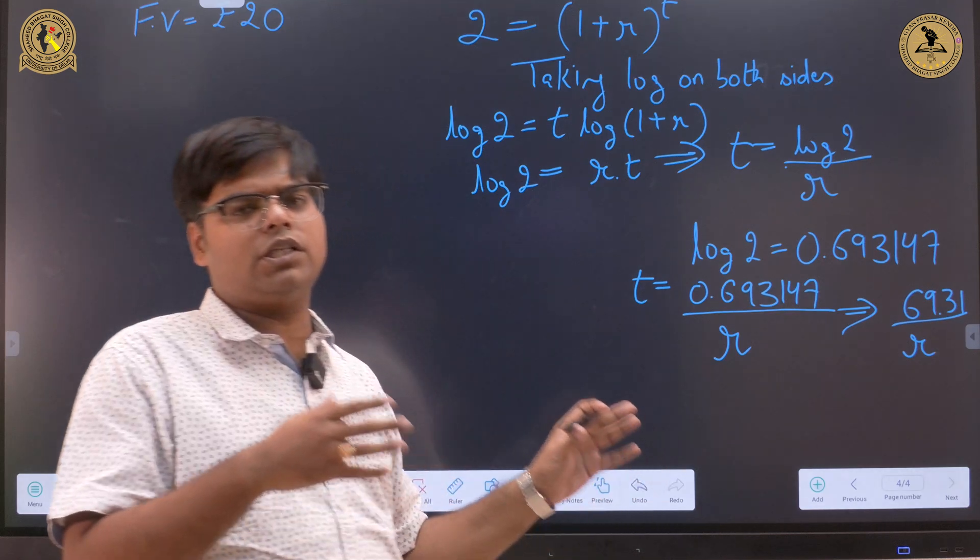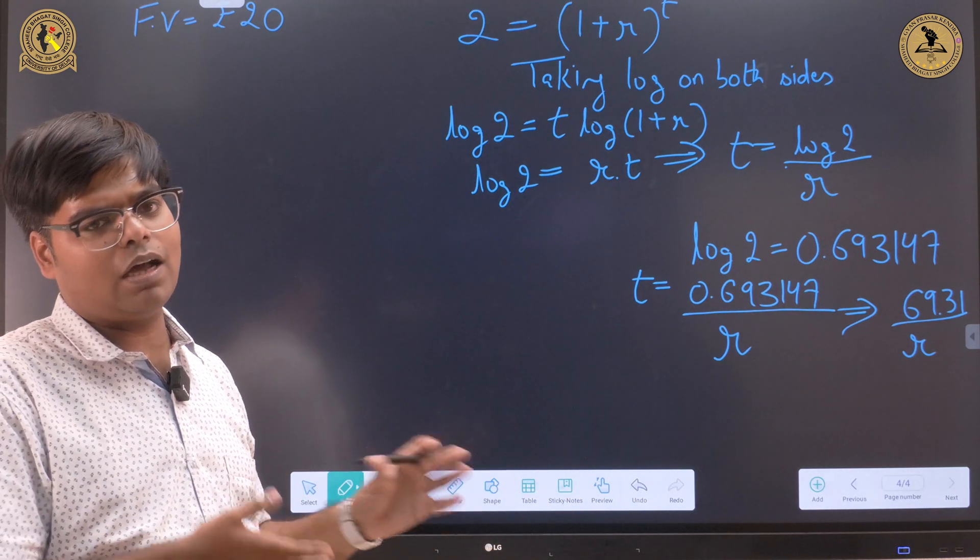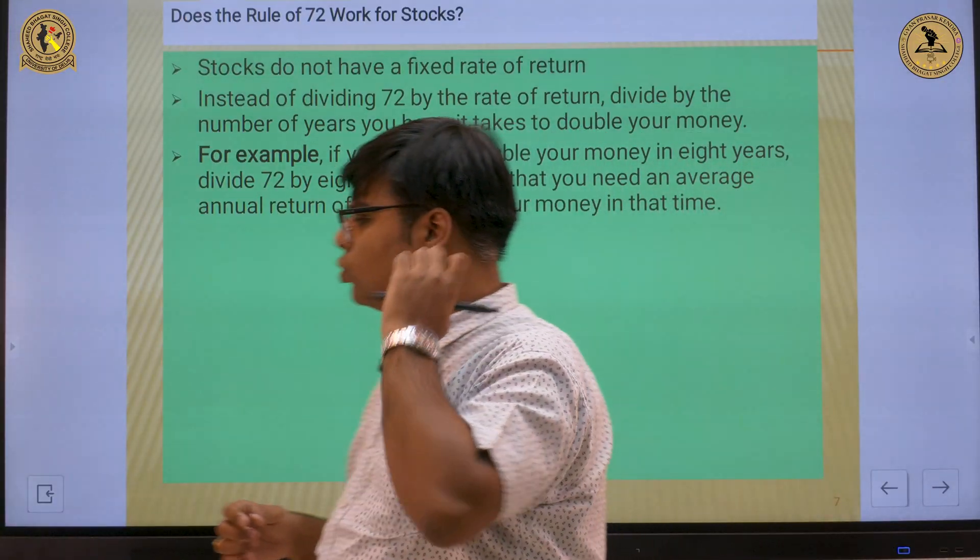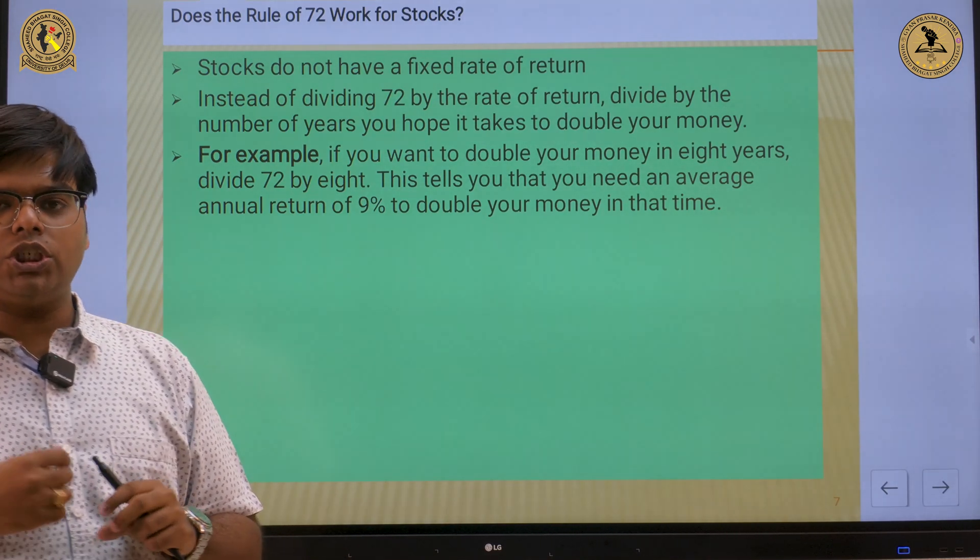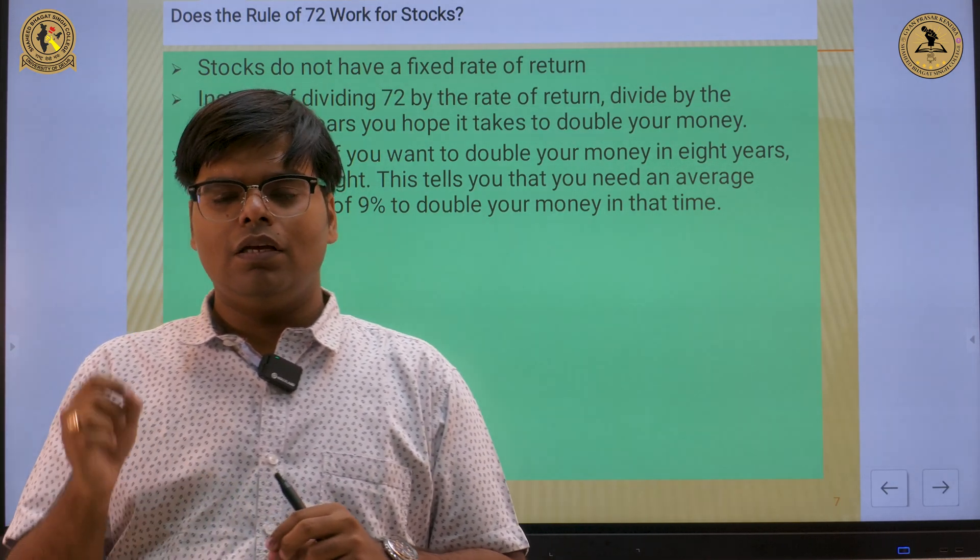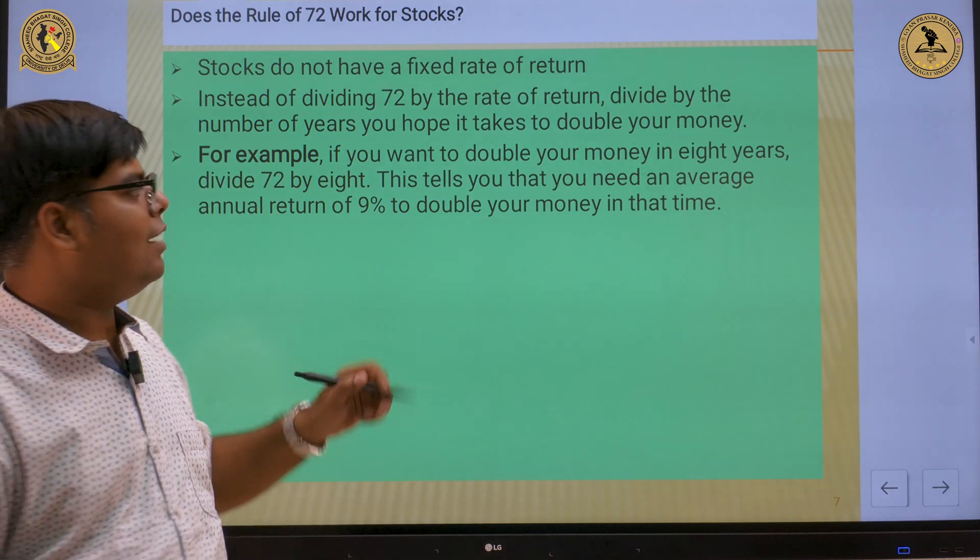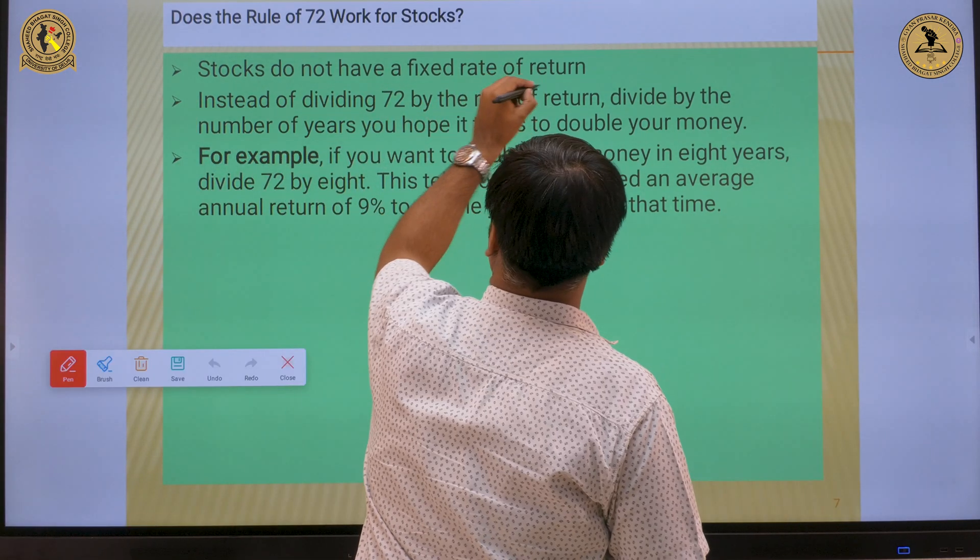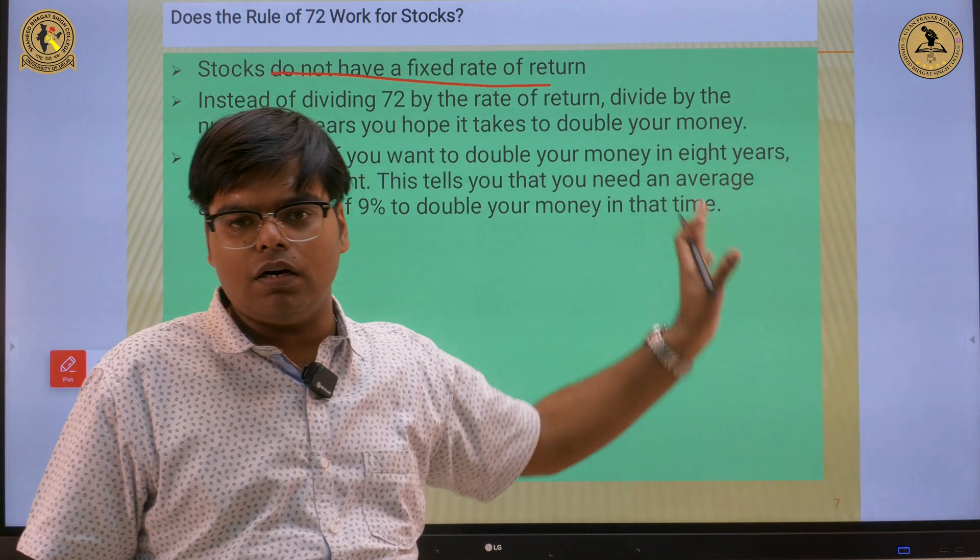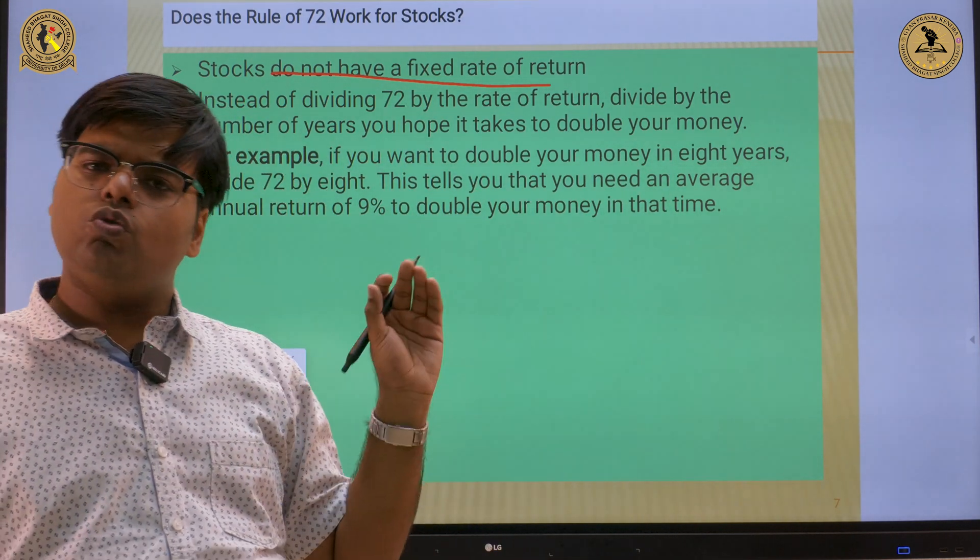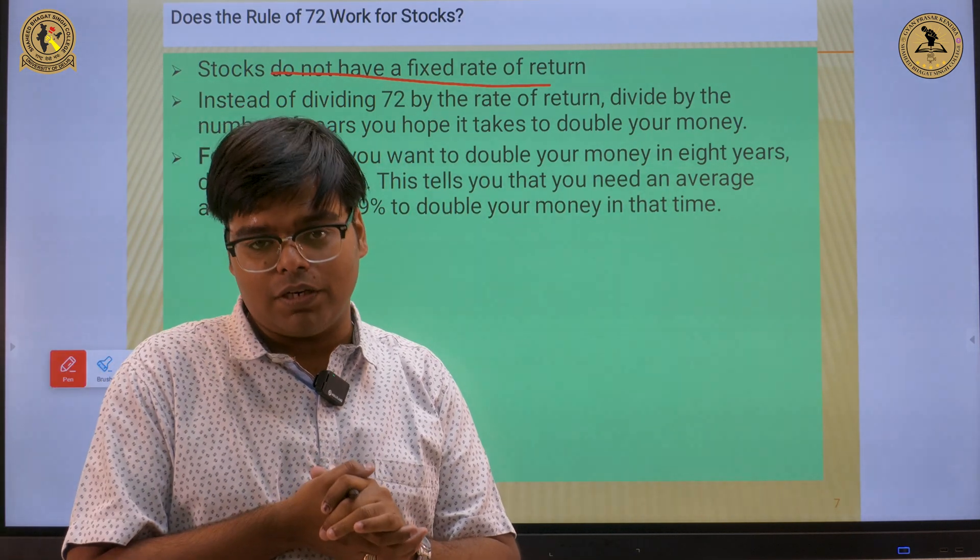Now the question arises: can we apply the rule of 72 to equity shares or to stocks? We know that the equity shares have a variable return, their return keeps on fluctuating. So we cannot apply the rule of 72. However, using this rule, we can compute the expected rate of return.